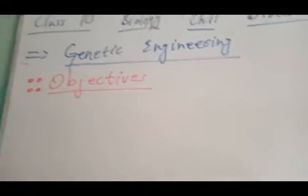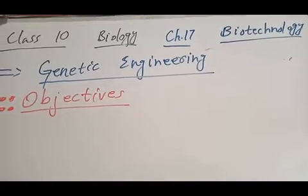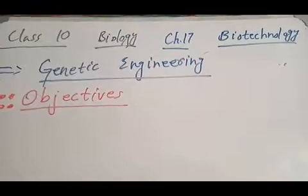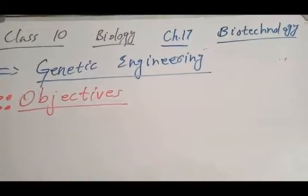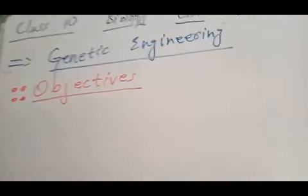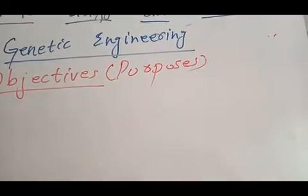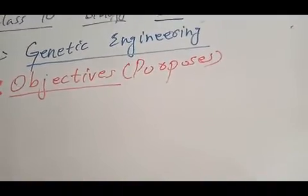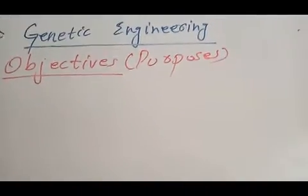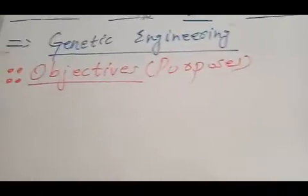Next we will discuss objectives of genetic engineering — Chapter 17, Biotechnology, Class 10 Biology. The objectives of genetic engineering refer to the processes and purposes of genetic engineering. Genetic engineering is used for the following purposes.